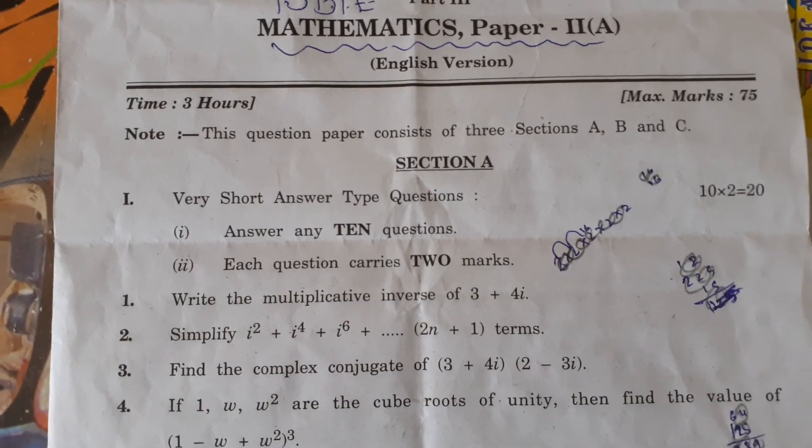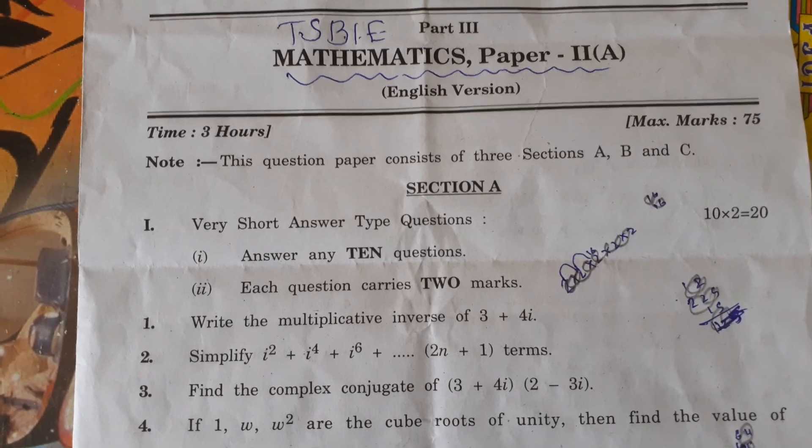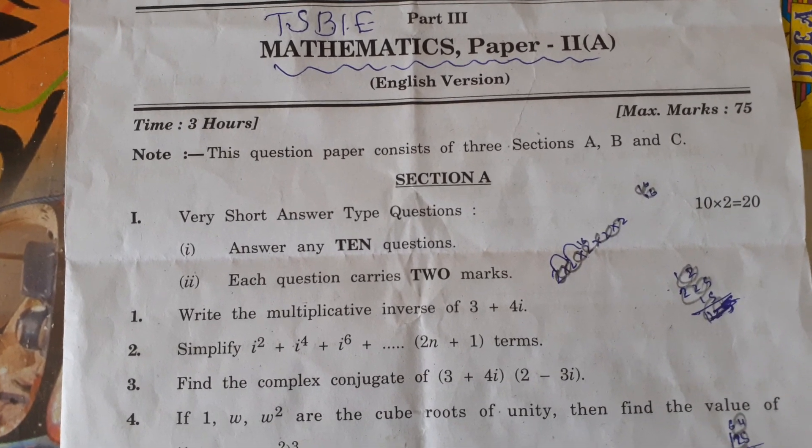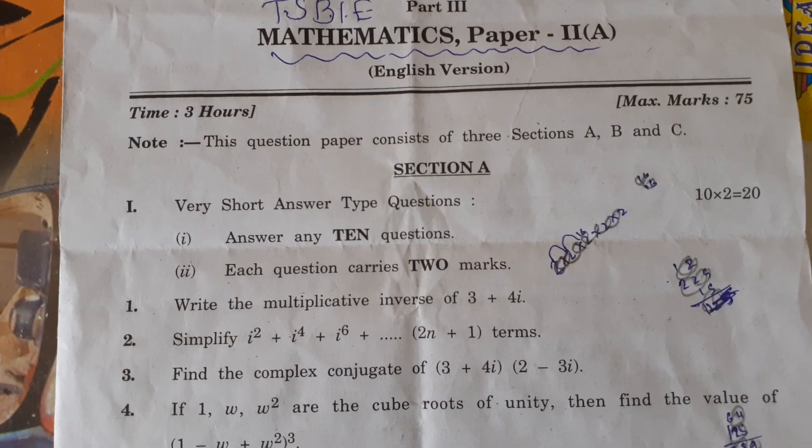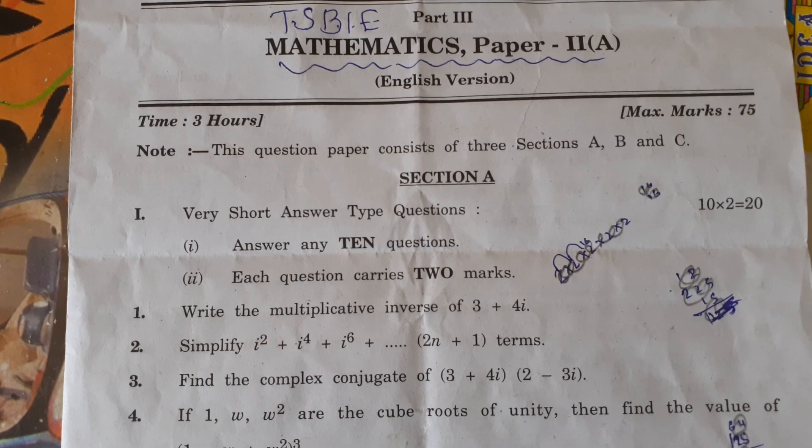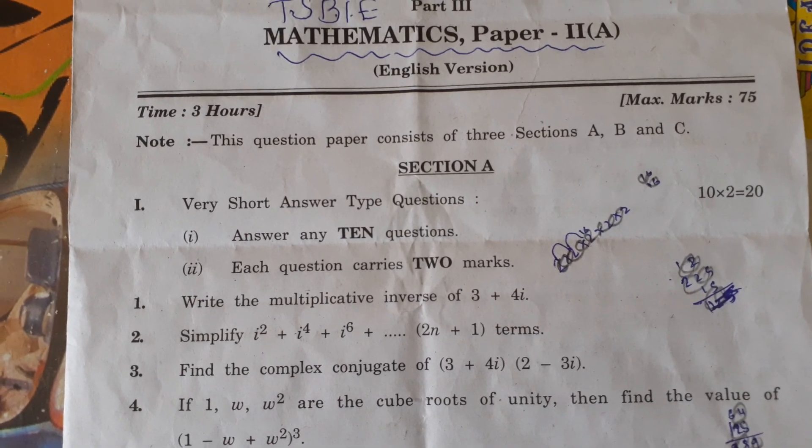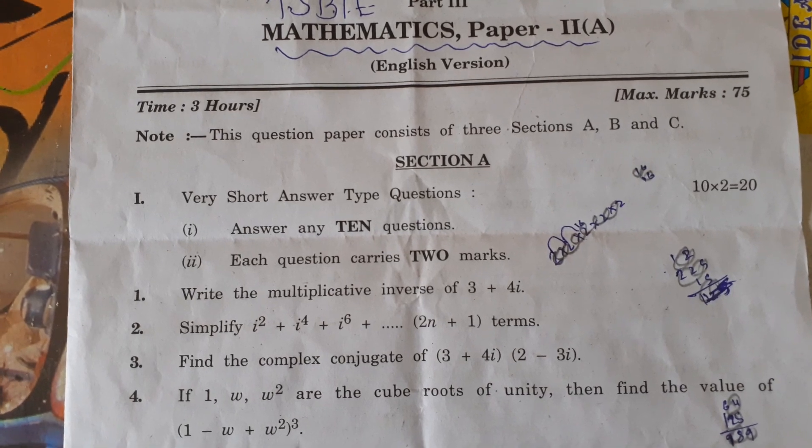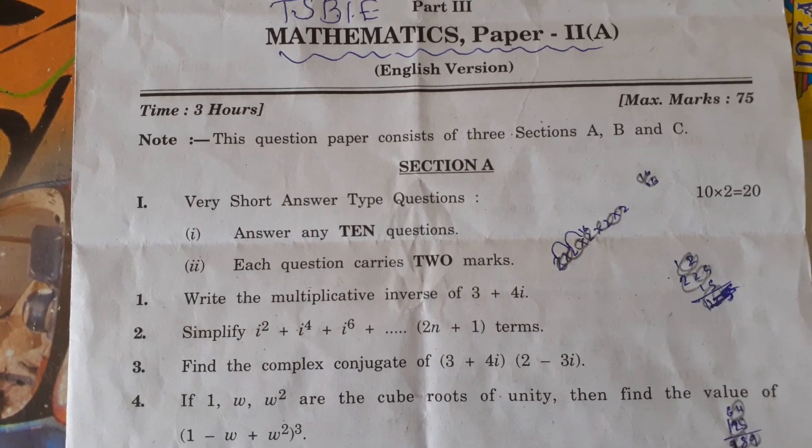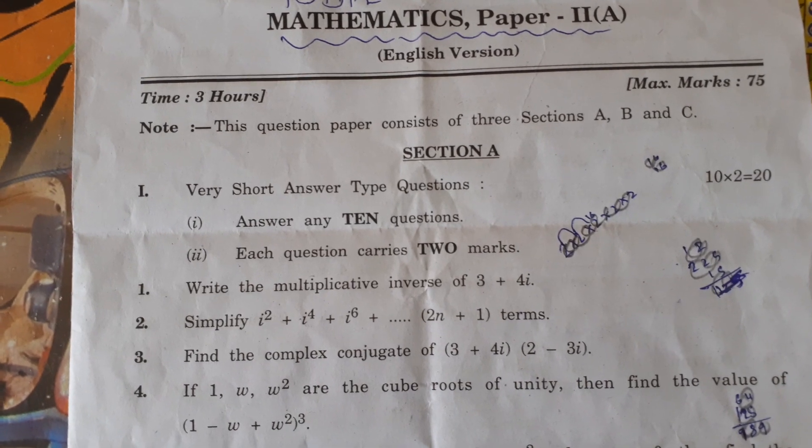Hello friends, welcome back to my channel. In this video we are going to discuss TSBAE Mass 2A paper advanced supplementary. Yesterday it was conducted, this will be useful for AP students also for the current year batch. So here we go now, TSBAE advanced supplementary Mass 2A paper, 75 marks paper.